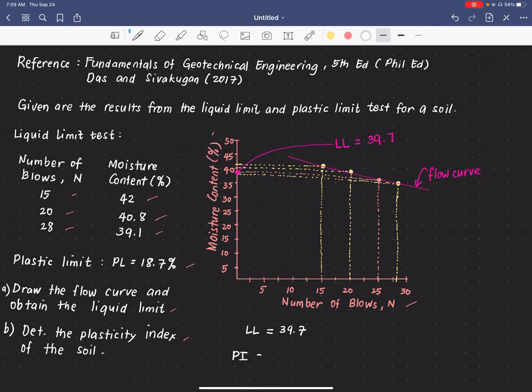From our formula of liquid limit minus plastic limit, we have 39.7, and the obtained value for the plastic limit is 18.7. And our plasticity index value is equivalent to 21.